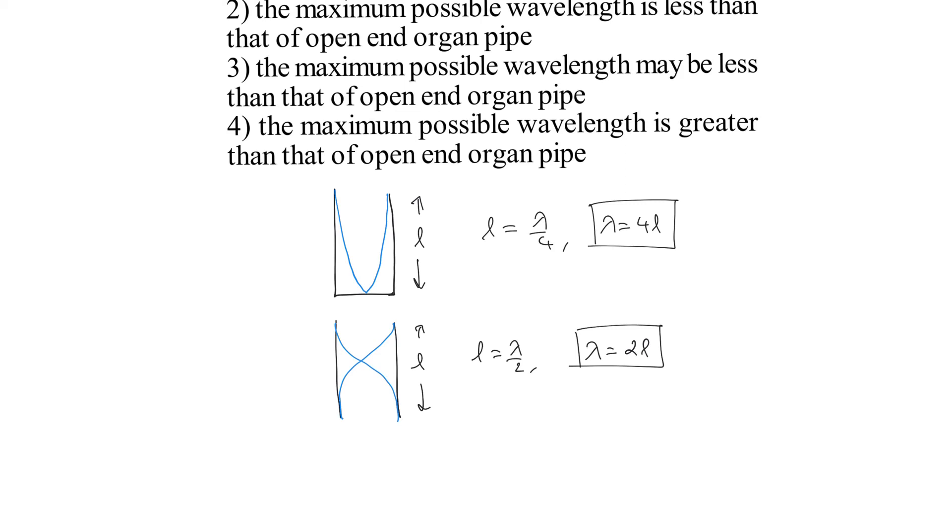So third option is given that maximum possible wavelength may be less than that of open end organ pipe. Yes, we know that as compared to this open end organ pipe, in case of closed end organ pipe, its wavelength we will find is more than that.